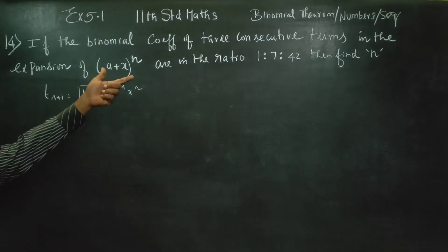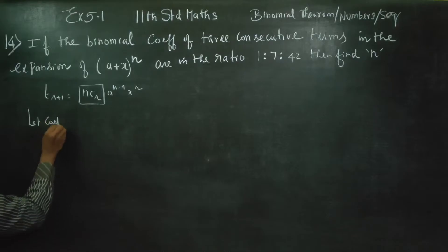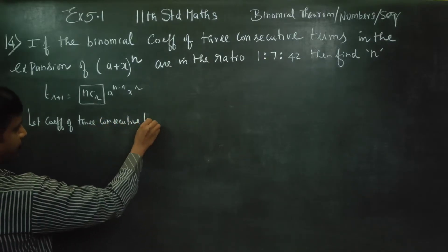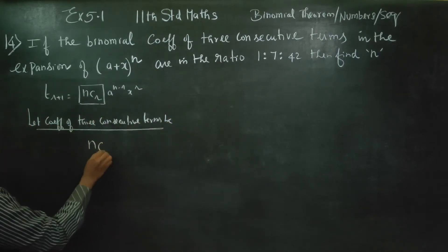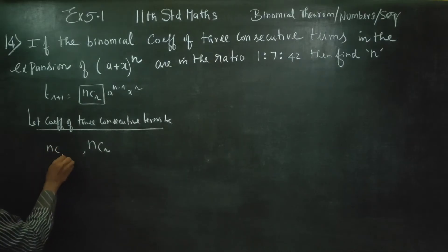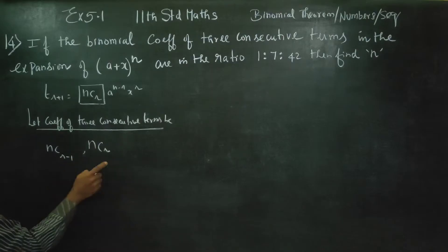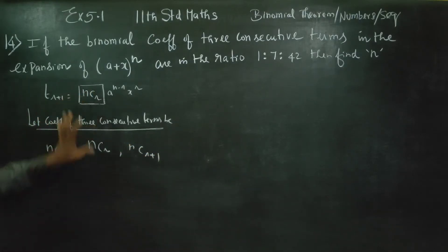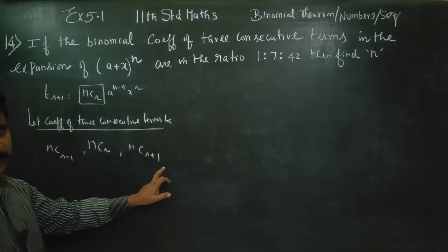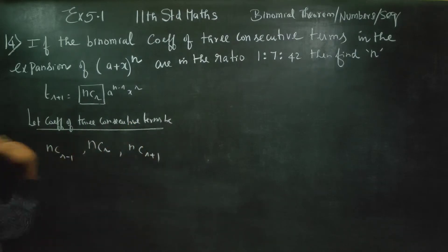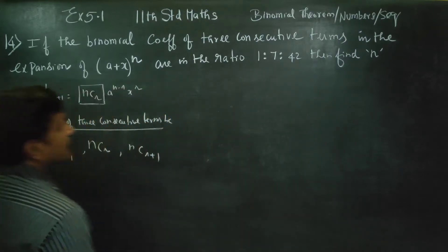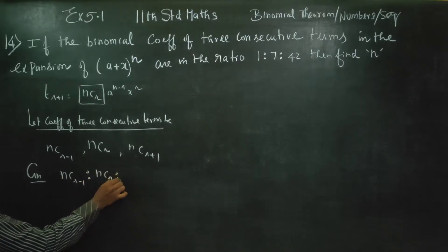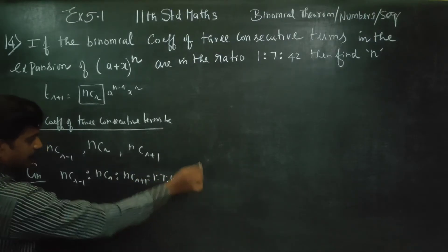Let the coefficients of 3 consecutive terms in the binomial expansion be nC(r-1), nCr, and nC(r+1). We can take any 3 consecutive terms and fix them. The given ratio is 1:7:42, so nC(r-1) : nCr : nC(r+1) = 1:7:42.